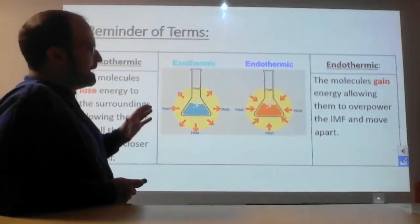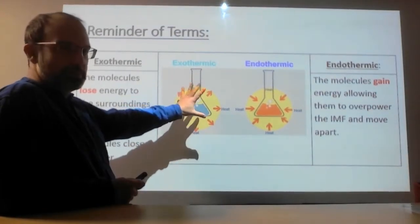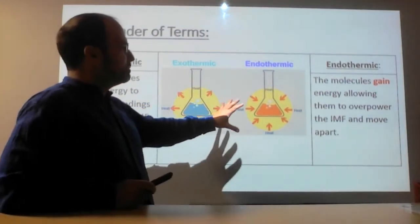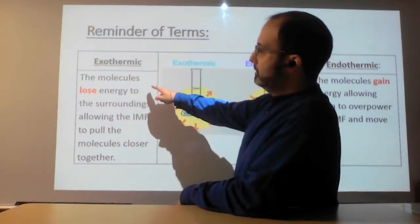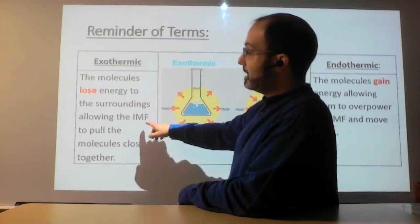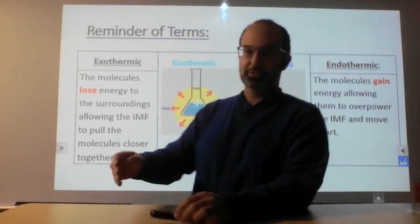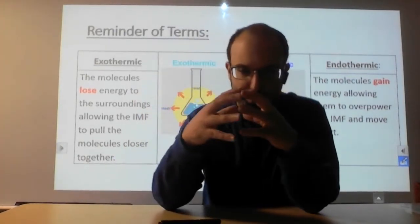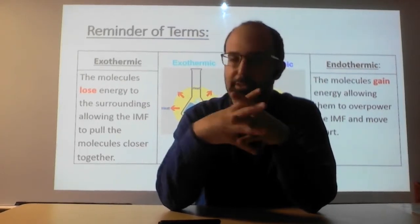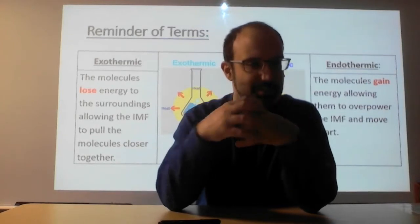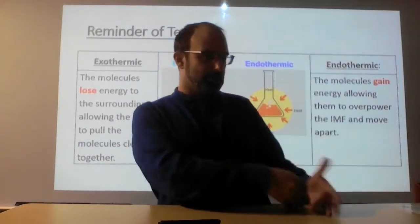What's going on? Reminder: we talked about exothermic and endothermic. Exothermic is when heat escapes from something — it leaves something. Endothermic is when heat comes in. So for exothermic, like you or I, the molecules lose energy to their surroundings. This allows the intermolecular forces, which we talked about last time, to pull the molecules closer together. If the intermolecular forces can pull the molecules together, they end up getting transformed — they solidify. They start to stick, and you go from gas to liquid or liquid to solid.